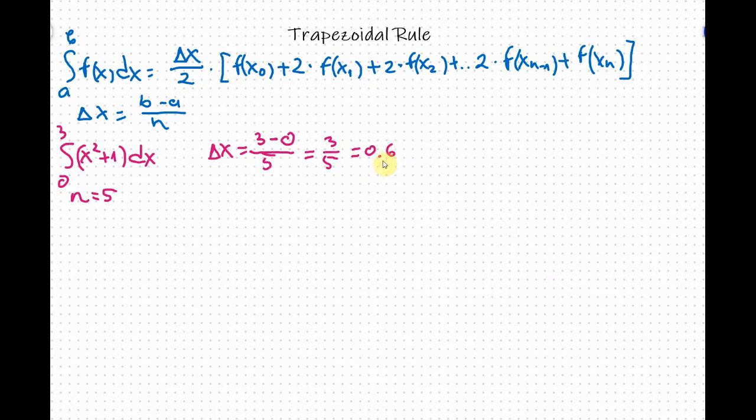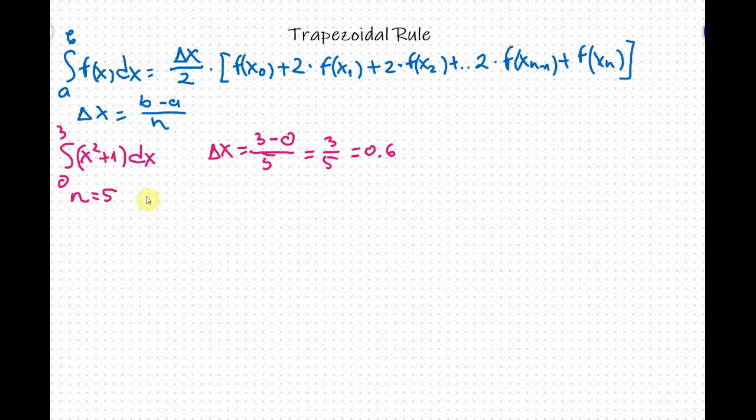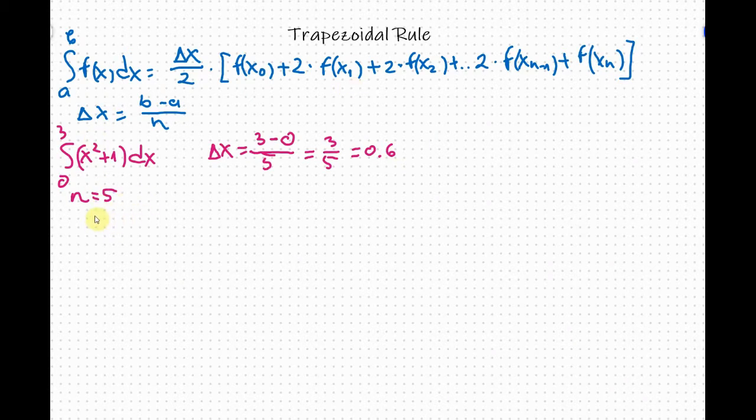Now we need to figure out our x sub 0, x sub 1, x sub 2, etc. I will write it like this. So we have x sub 0, x sub 1, x sub 2, x sub 3, x sub 4 and x sub 5.